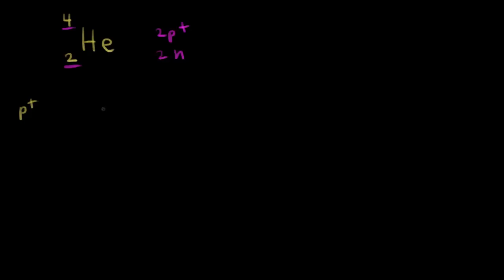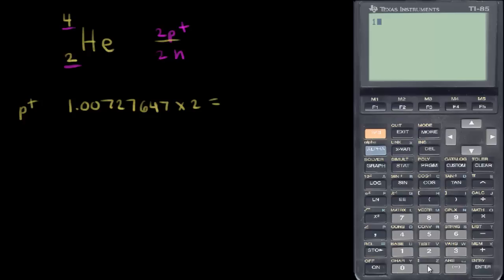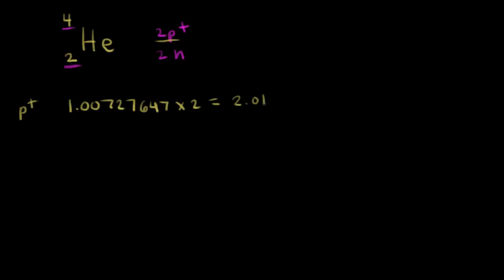The mass of a proton in AMUs — atomic mass units — is equal to 1.00727647. And we have two protons, so we need to multiply this number by two. So 1.00727647 times two gives us 2.01455294 AMUs.